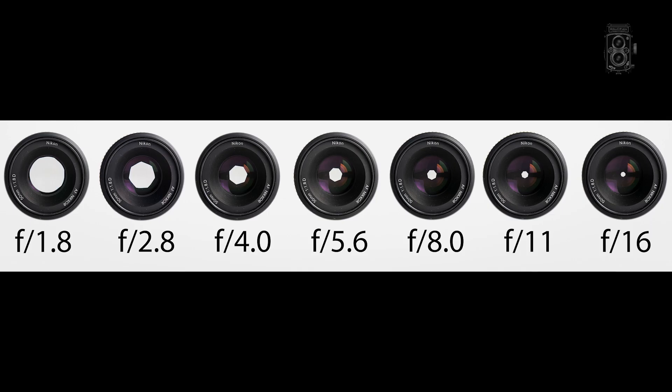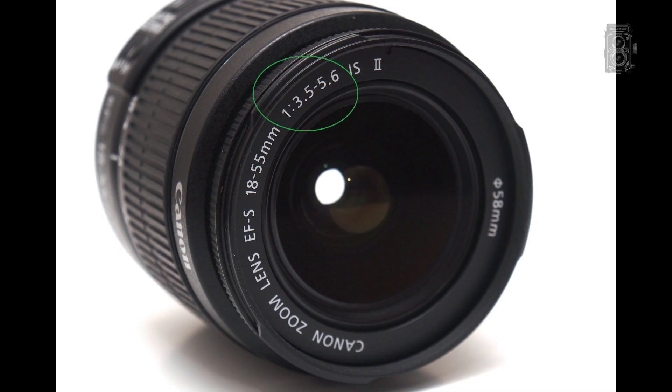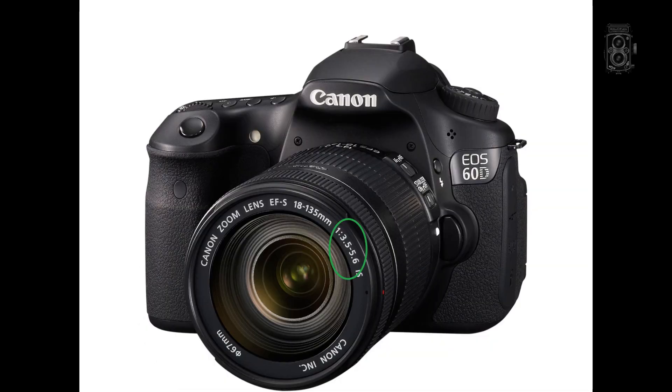This is large aperture, and this is small aperture. The size of the aperture is denoted by F numbers. Ever wondered what these values are on your lens? These are the largest apertures your lens can offer.